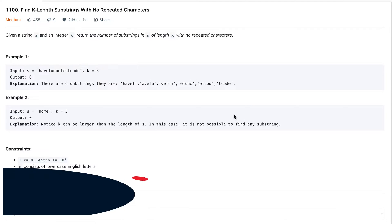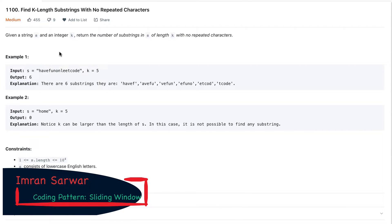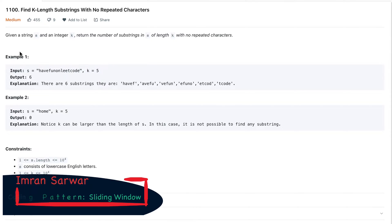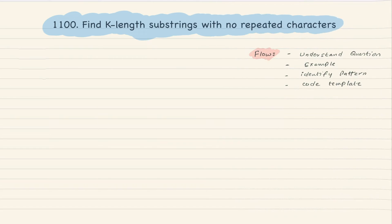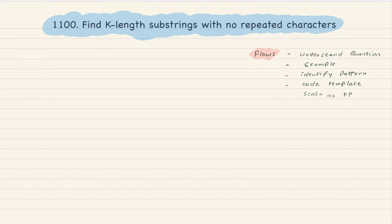Hi, hello! Today we'll be talking about our first sliding window question: find k-length substrings with no repeated characters. Our flow will be: understand the question, take an example, identify the pattern to see if we can apply a sliding window, and at the end go with the code template. I'm going to use Scala and implement using functional programming.